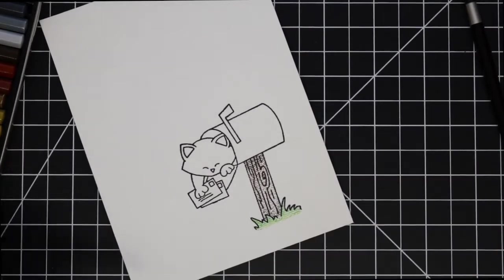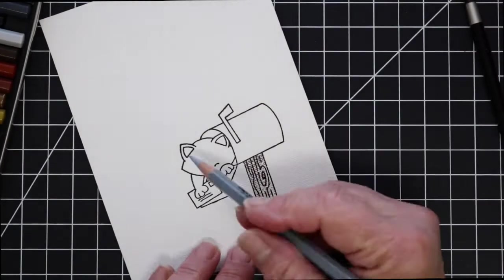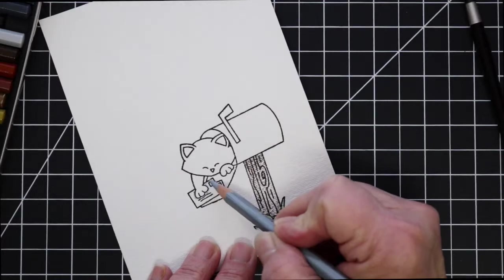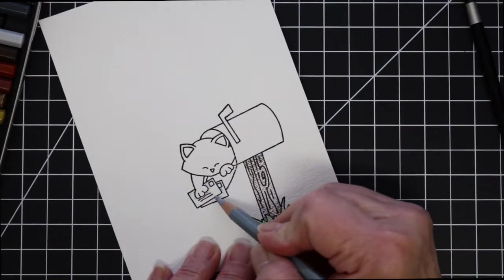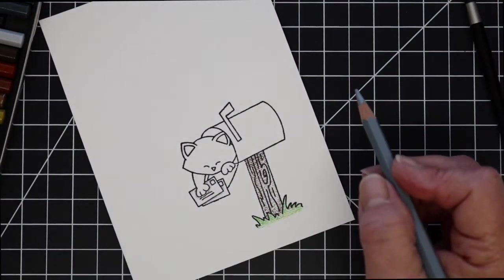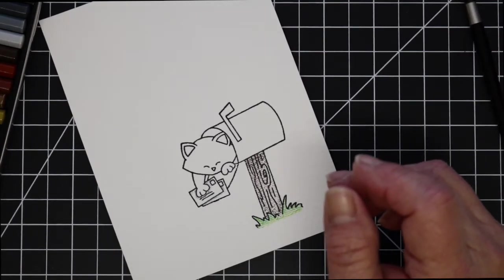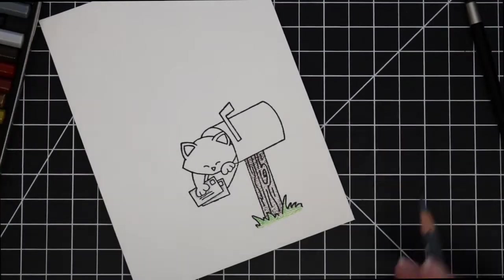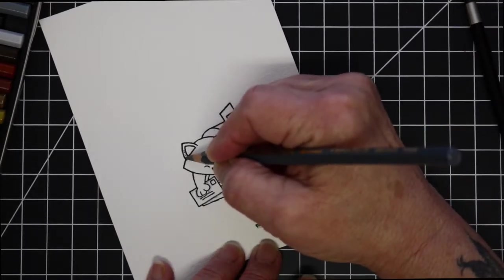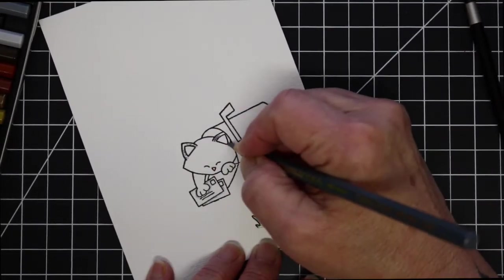A little bit of light gray for the envelopes just to give a little shadow, and then I will end up doing the postage stamps in red as well as the flag in red, and then I'm going to use three different gray colors to color my little Newton.